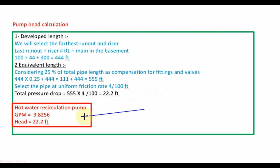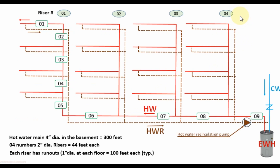From this calculation, we have selected our hot water recirculation pump with 9.8256 GPM and 22.2 feet of water head. The total GPM required is approximately 10, and we have 16 branches. Dividing 10 by 16, the GPM in each branch will be 0.625.